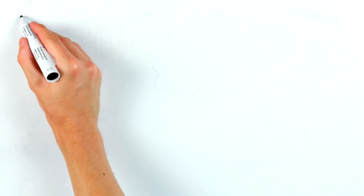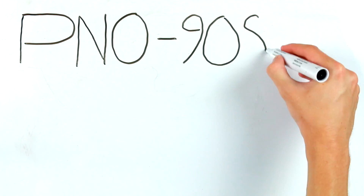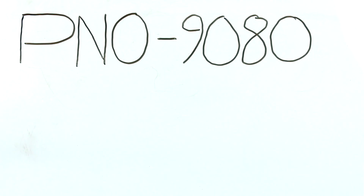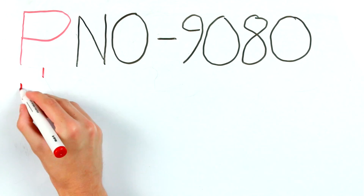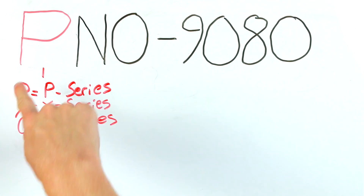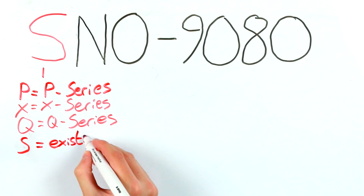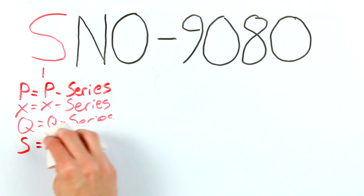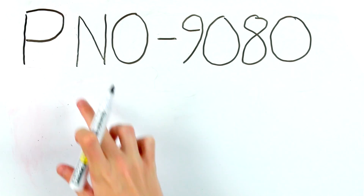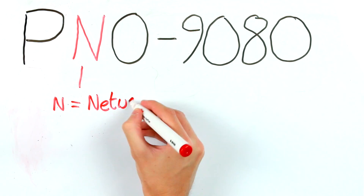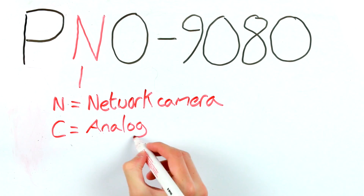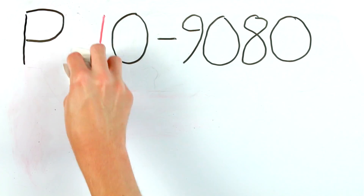The final part of this video is a quick run-through of Samsung's product naming rule. At the start of all Samsung codes there will be three letters. The first letter is the range the camera comes from — P for P series, X for X series and so on. Some cameras will have an S at the beginning; this is for older existing camera ranges such as the Lite series or the 3 series. The second letter will almost always be an N, as this stands for network camera. Samsung does offer an analogue range, but product codes with a C as the second letter indicate analogue, not IP, cameras.